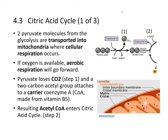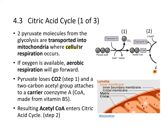Continuing on with the citric acid cycle: two pyruvate molecules from glycolysis are transported into the mitochondria, and that's the location of cellular respiration. If oxygen is available, aerobic respiration will go forward.